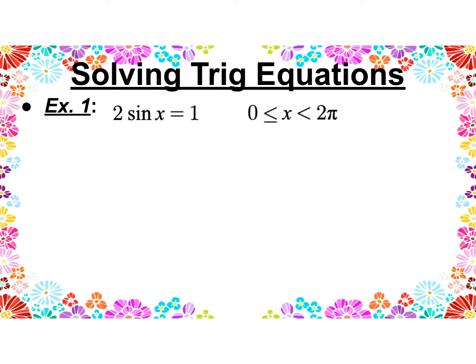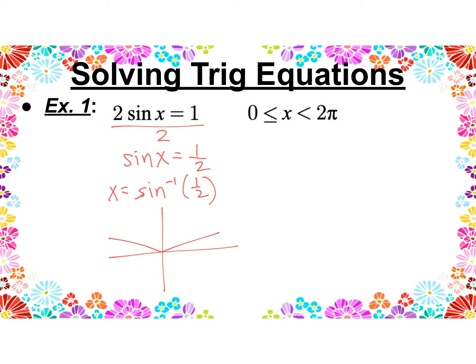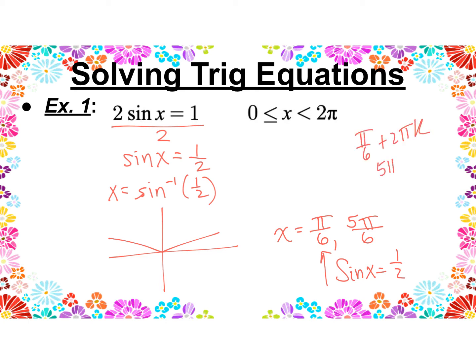Let's try solving 2sin x = 1 on the unit circle — interval notation, between 0 and 2π, not including 2π. We do regular algebra here: divide both sides by 2 to get sin x = 1/2. We want to know when the sine equals 1/2, so x = π/6 and x = 5π/6. If it only asked for the principal answer — capital Sine of x = 1/2 — it would just be π/6. If it asked for all answers, we'd write π/6 + 2πk and 5π/6 + 2πk.